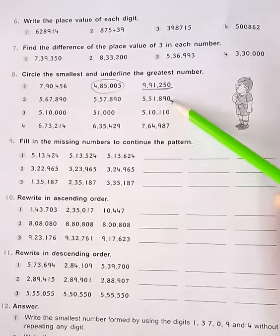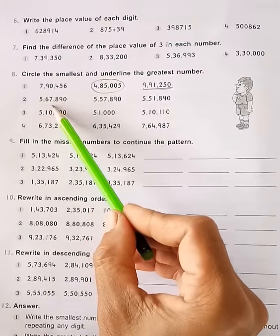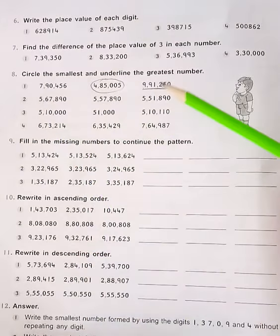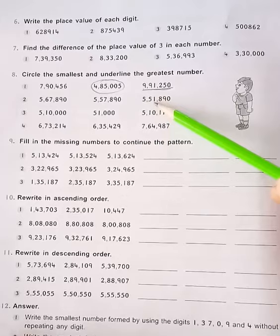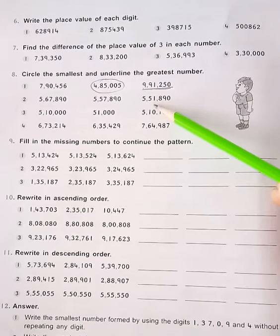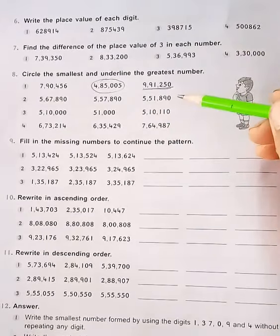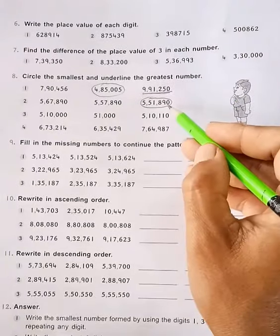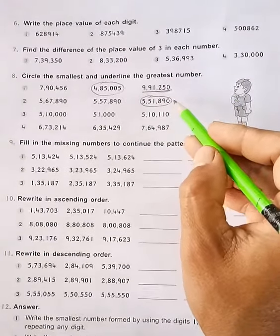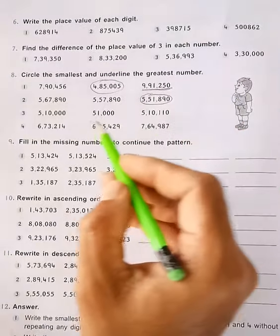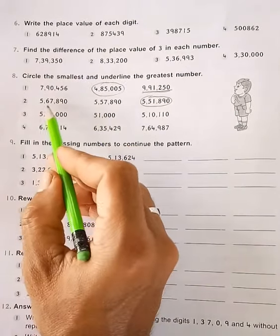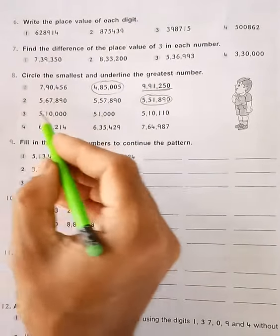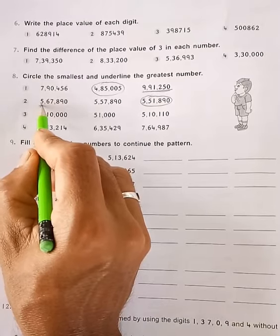Here, five lakh sixty seven thousand is the greatest number and five lakh fifty one thousand is the smallest number. We circle the smallest number, and we underline the greatest number — five lakh sixty seven thousand.